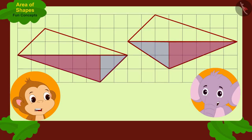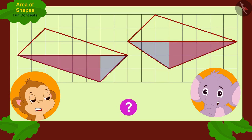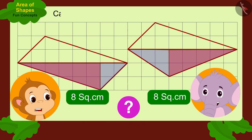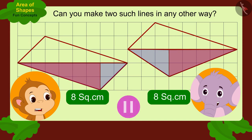Children, is it possible that by drawing only two lines we can create different looking shapes whose area is eight square centimeters? Can you make two such lines in another way? If you wish, you can stop the video and find the answer.